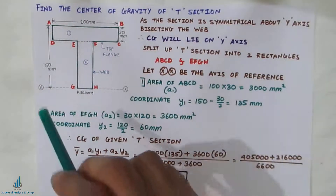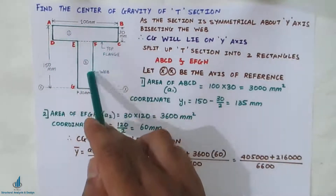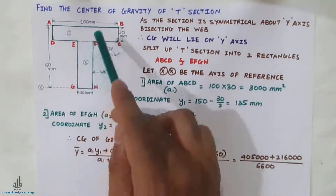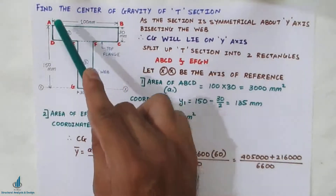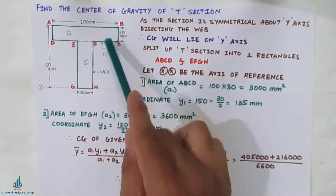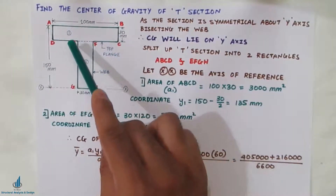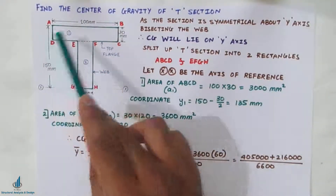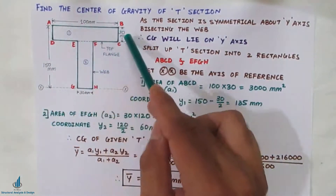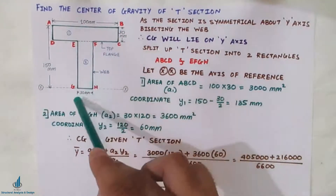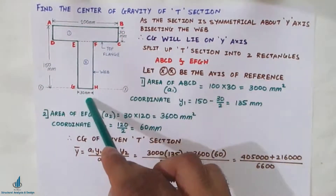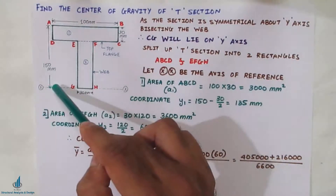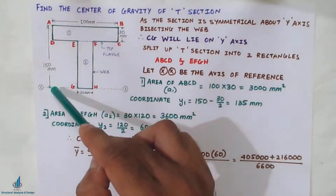This is the simple T-section I have taken. The dimensions I have given are for the top flange and the web. The head part is known as the top flange and the bottom part is known as the web. The width of the top flange is 100 mm and depth is 30 mm. The web width is 30 mm and the entire height of the T-section is 150 mm.